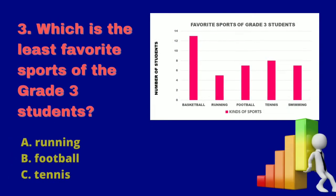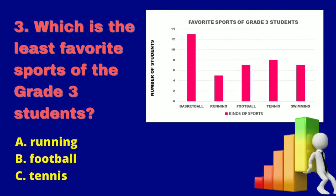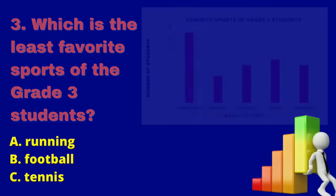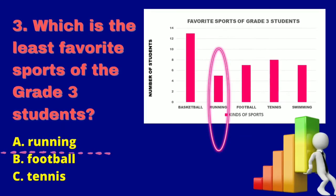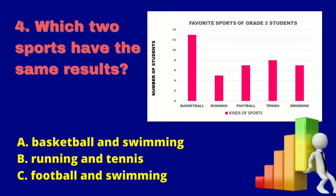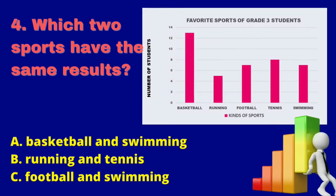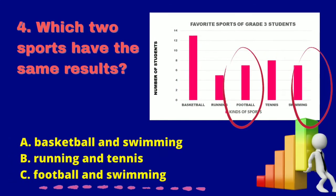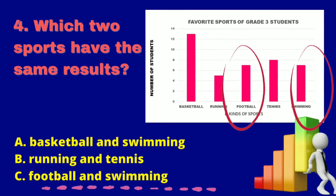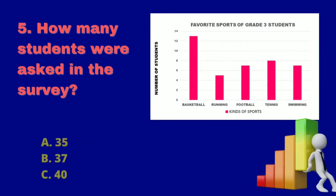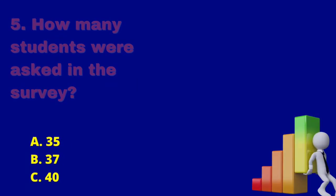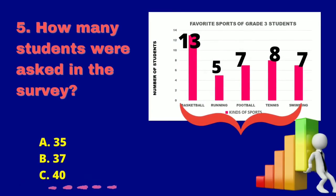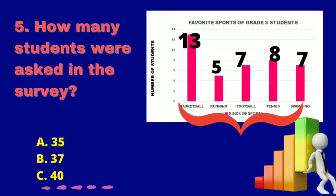Number 3: Which is the least favorite sport of the grade 3 students? The answer is running. Number 4: Which two sports have the same results? The answer is football and swimming. Number 5: How many students were asked in the survey? In order to get the answer, you are going to add 13, 5, 7, 8, and 7. The answer is 40.